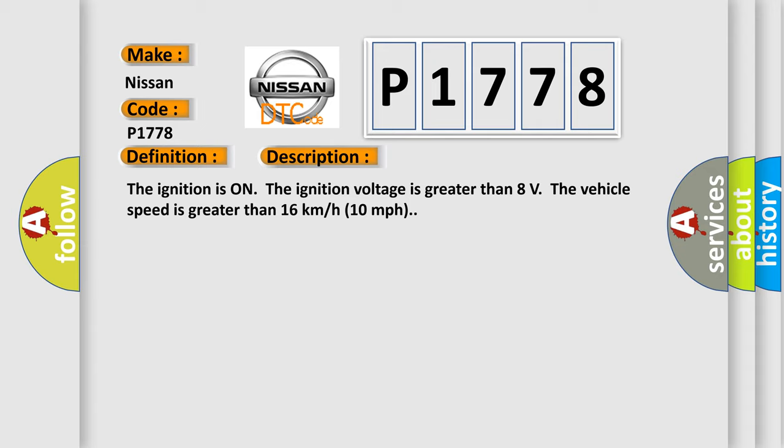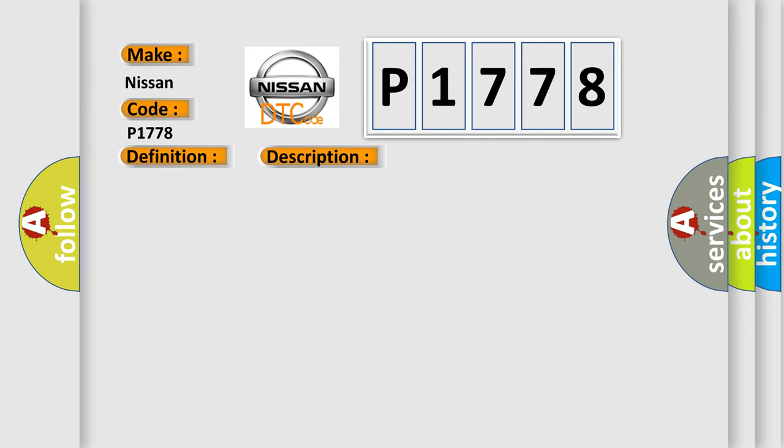The ignition is on. The ignition voltage is greater than 8 volts. The vehicle speed is greater than 16 kilometers per hour, 10 miles per hour. This diagnostic error occurs most often in these cases.